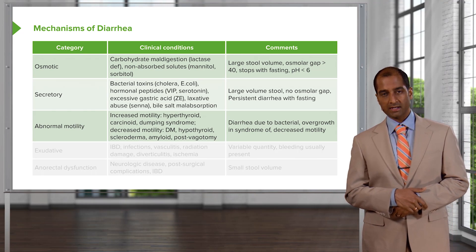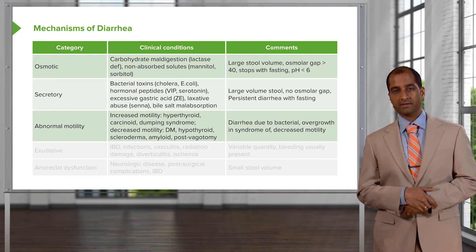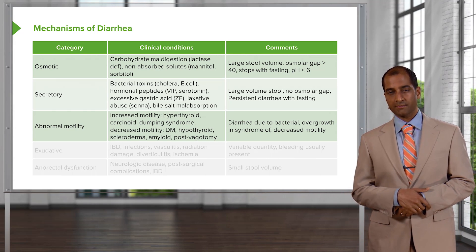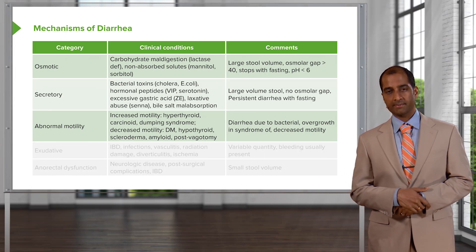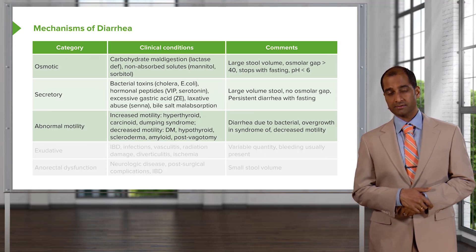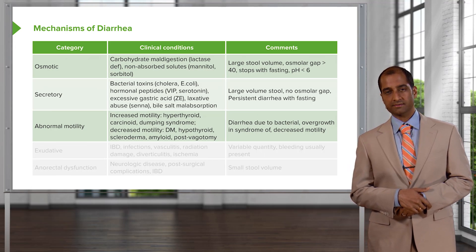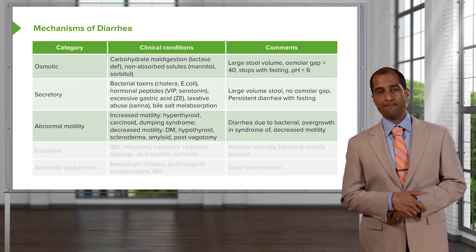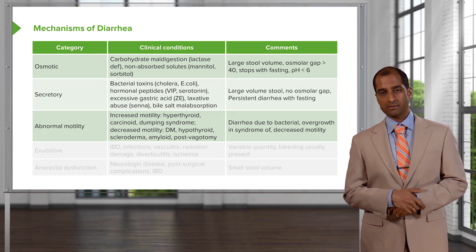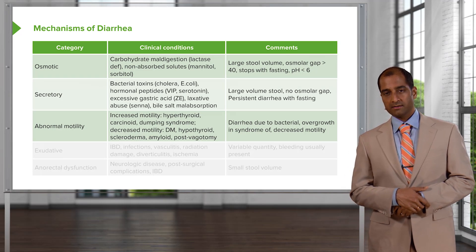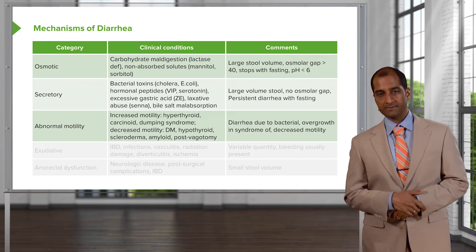Thyroid issues — increased motility. Hyperthyroidism would cause diarrhea. Whereas decreased motility: diabetes mellitus would slow things down because of diabetic neuropathy. Also, what if you had SCL-70 and fibrosis? Scleroderma, if it's visceral and systemic, may cause fibrosis throughout, including the intestine, leading to decreased motility. Along with this, hypothyroidism — for example, if you have Hashimoto's and primary hypothyroidism, the patient may suffer from constipation, or diarrhea due to bacterial overgrowth syndrome from decreased motility.